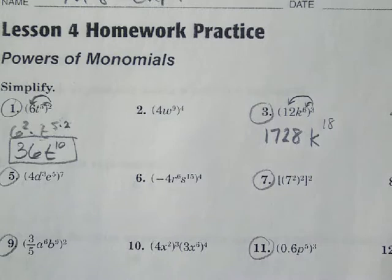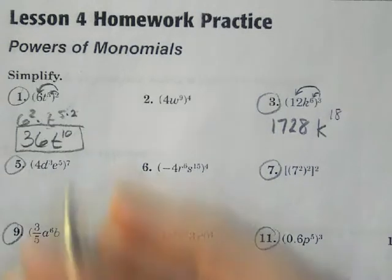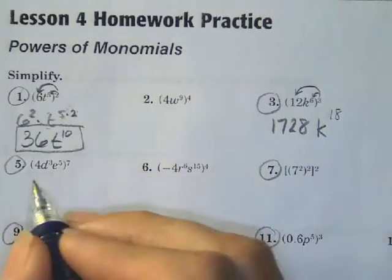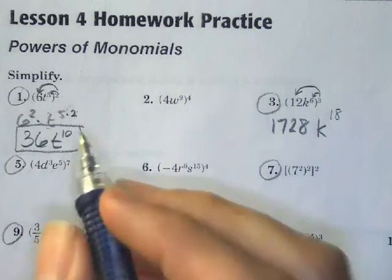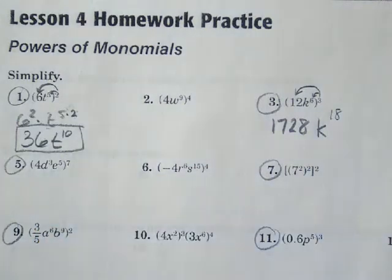Moving to number 5. Number 5, I want to do 4 to the 7th power. Okay, and that becomes 1, 2, 3, 4, 5, 6, 7. Alright, which is a crazy number, that's for sure.